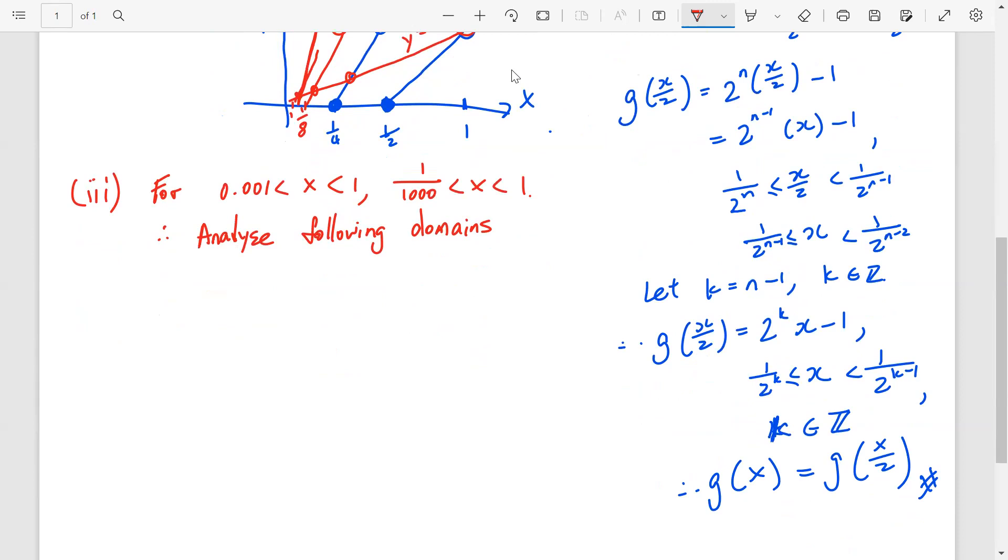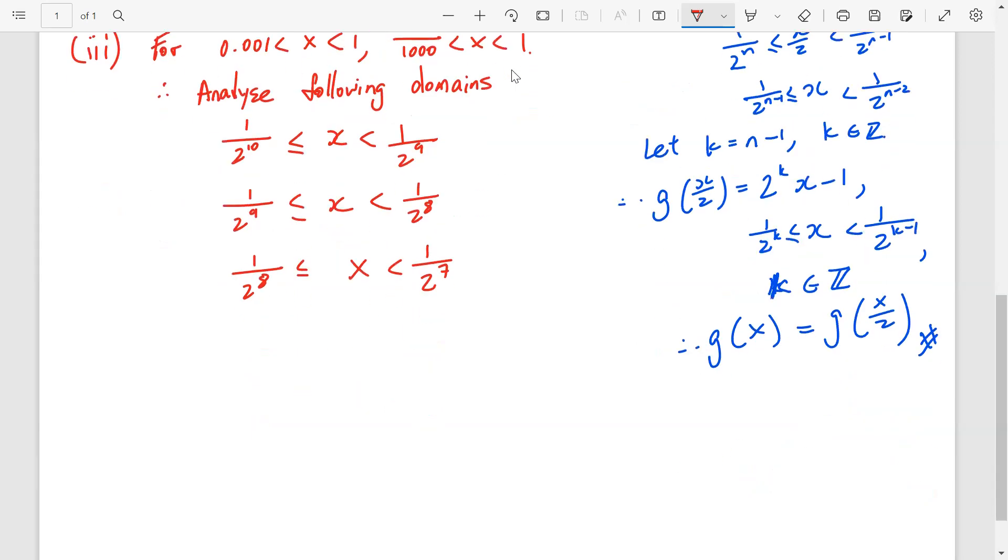1 over 2 power 10, which is actually 1024, x, 1 over 2 power 9, x, 1 over 2 power 8, equal sign here, 1 over 2 power 8. You want, you can write down everything, in an exam, but, I am not going to write down, I am going to be very lazy here.